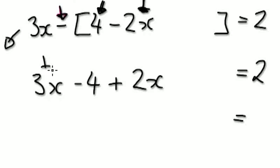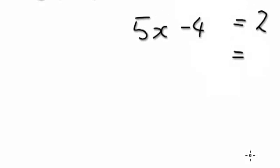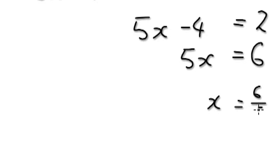Now you've got 3 bags plus 2 bags. That would be 5 bags minus 4 sweets equals 2. So add 4 to both sides. That would be 6, 5x over here. Divide both sides by 5. This would be 6 over 5. This would be your final answer, 6 over 5.